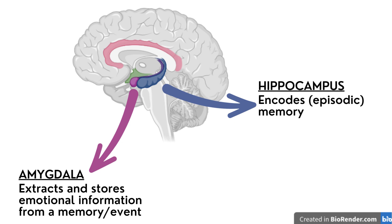The integration of episodic and semantic memories is facilitated by REM sleep. This emotional processing, which happens in REM sleep, fails in people with PTSD.